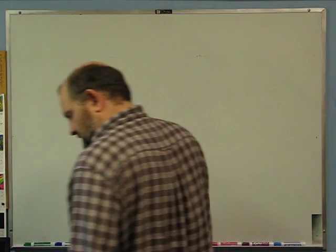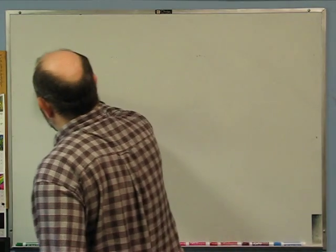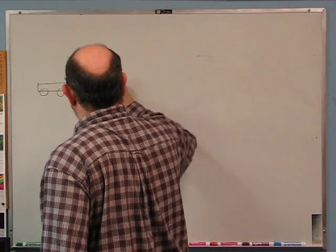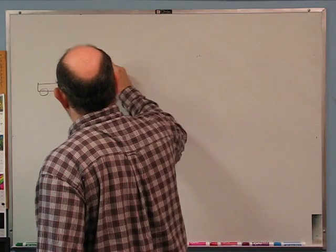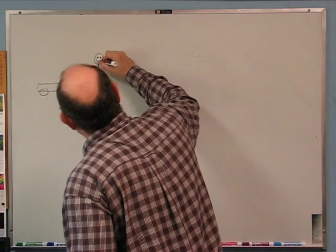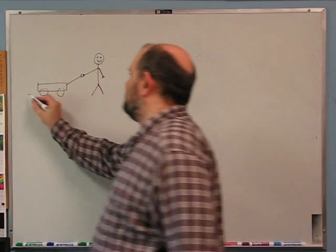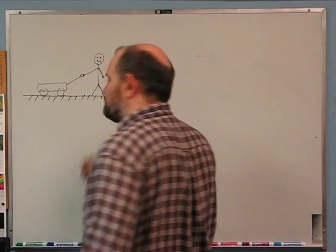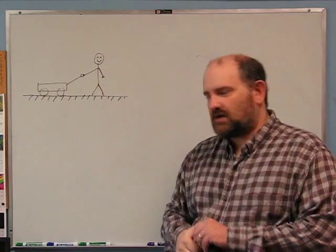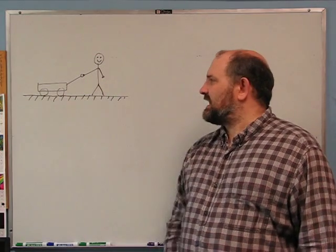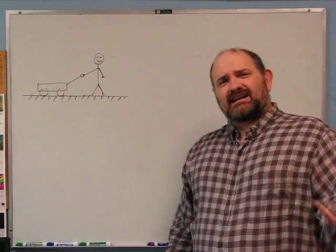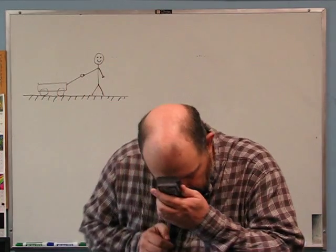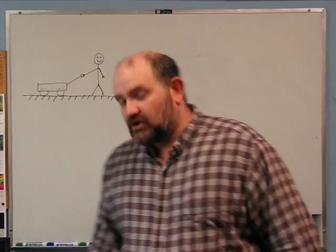Second problem: a child is pulling a wagon by its handle. I'll draw the situation — here's the wagon, here's the handle, here's the child and the child's hands. I'll draw the ground too because the implication is it's on the ground. Draw a free body diagram for the wagon and for the child, including all relevant forces, and identify any third law pairs.